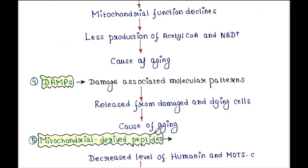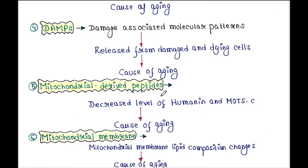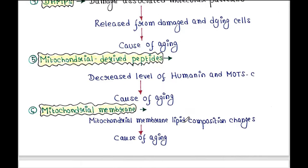Next is mitochondrial derived peptides. There are some mitochondrial proteins like humanin and MOTSC. When these proteins are reduced in mitochondria, they cause aging. Next is mitochondrial membrane — its lipid composition changes over time and leads to aging.